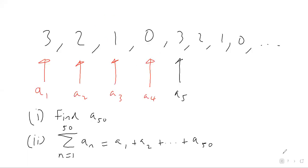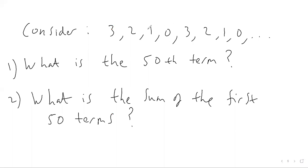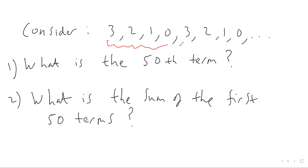So that answers both questions. We found the 50th term by using the periodicity of order four: the 48th term is zero, so the 49th is three and the 50th is two. For the sum, we summed up to 48 — a multiple of four — doing 12 times six to get 72, then added three and two for the 49th and 50th terms, giving a final sum of 77. That concludes this example of working with a periodic sequence.